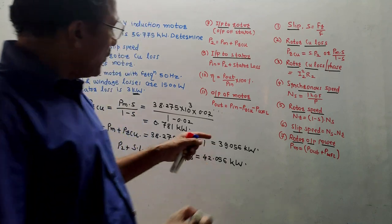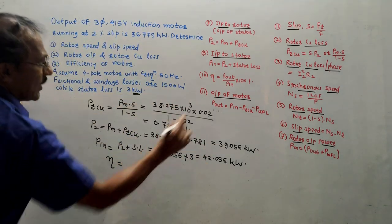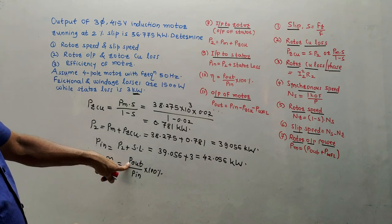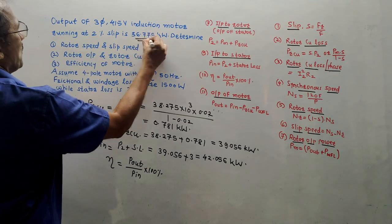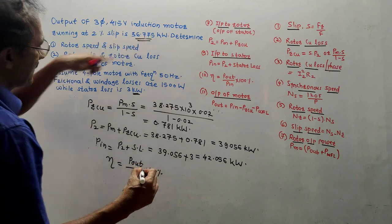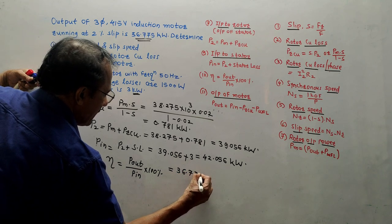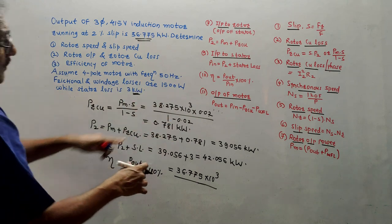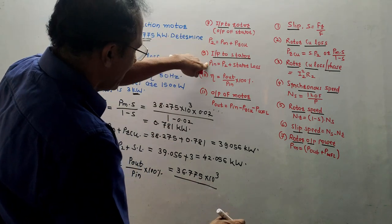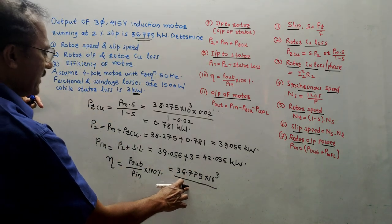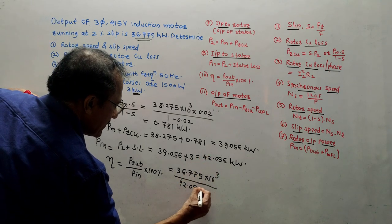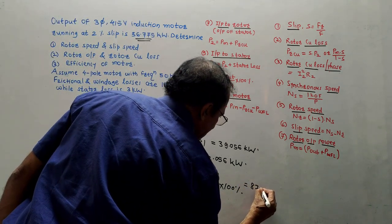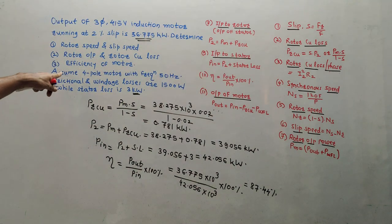Now calculate efficiency using formula number 10: η = (Pout / Pin) × 100%. Pout is the output power of the induction motor = 36.775 kilowatt = 36.775 × 10³ W. Pin is the input power we calculated = 42.056 × 10³ W. So η = (36.775 × 10³) / (42.056 × 10³) × 100% = 87.44%. This is the final answer for the efficiency of the motor.